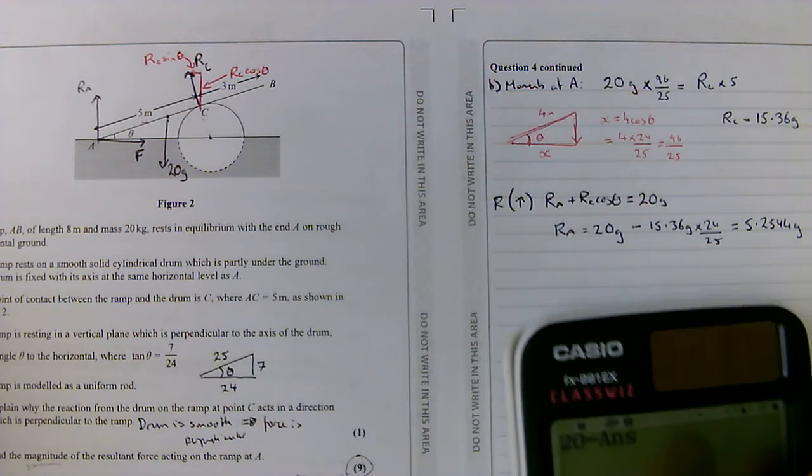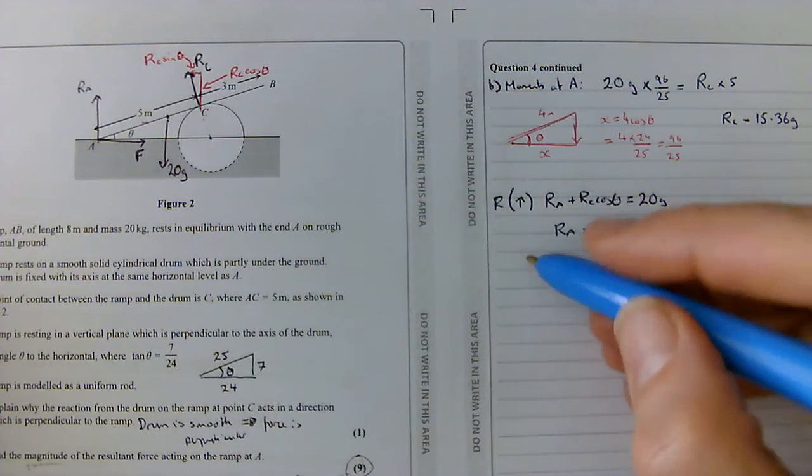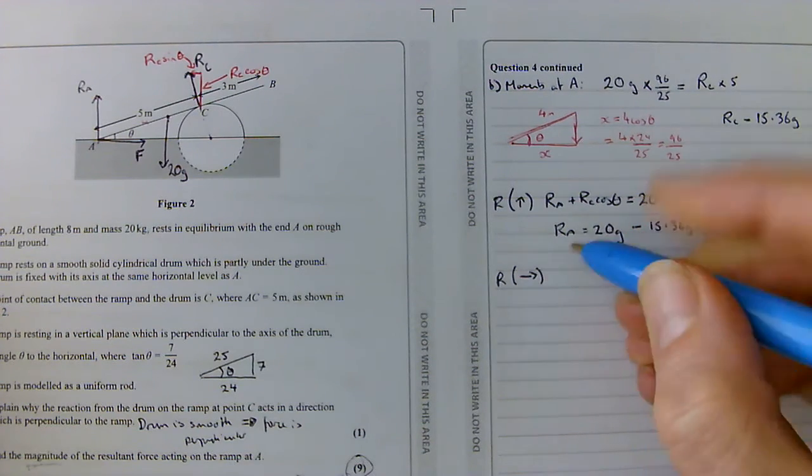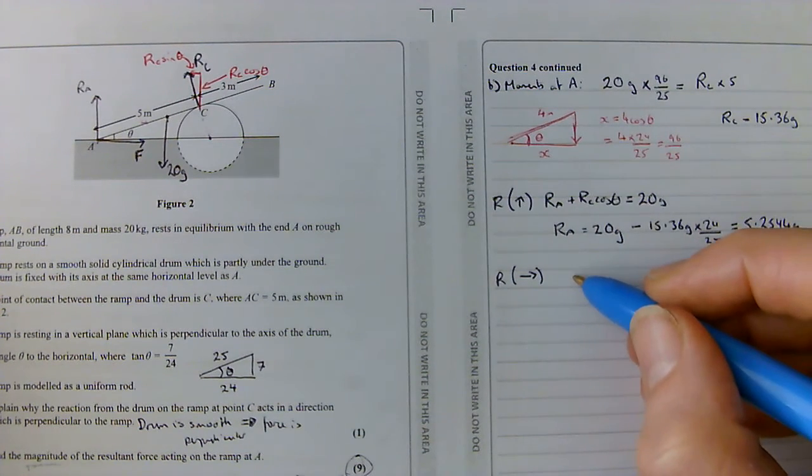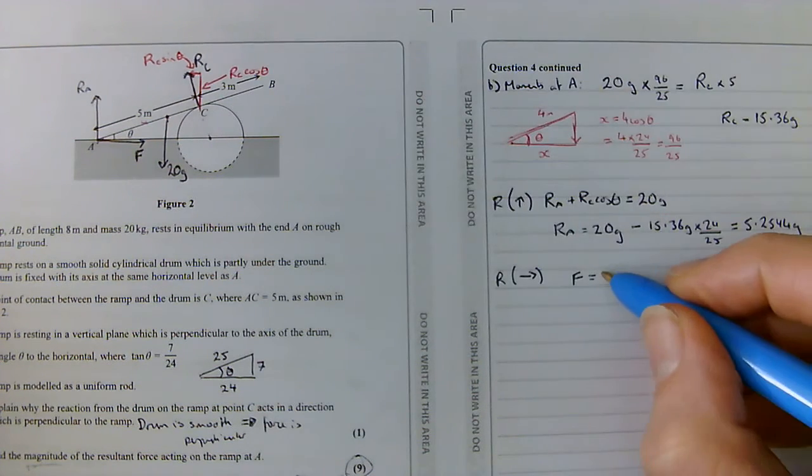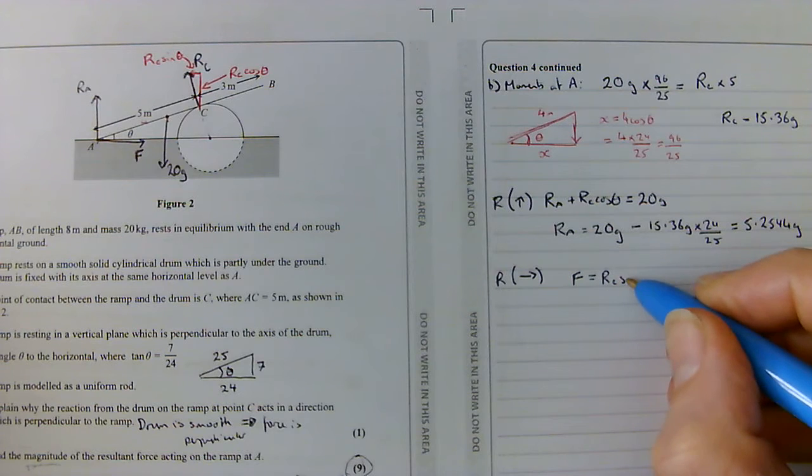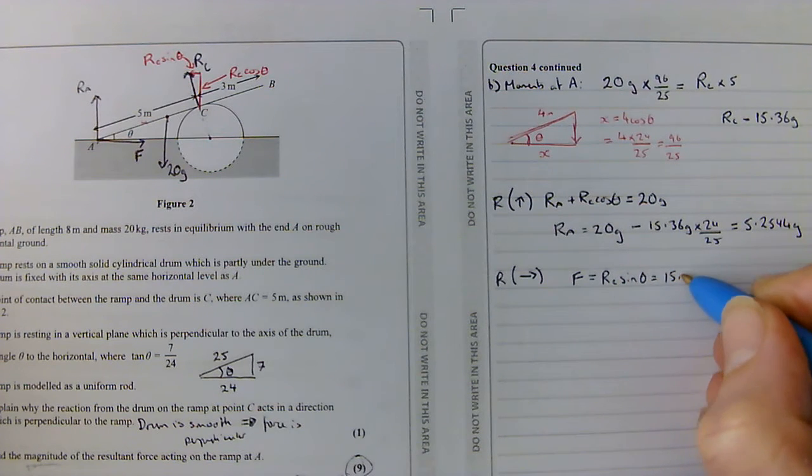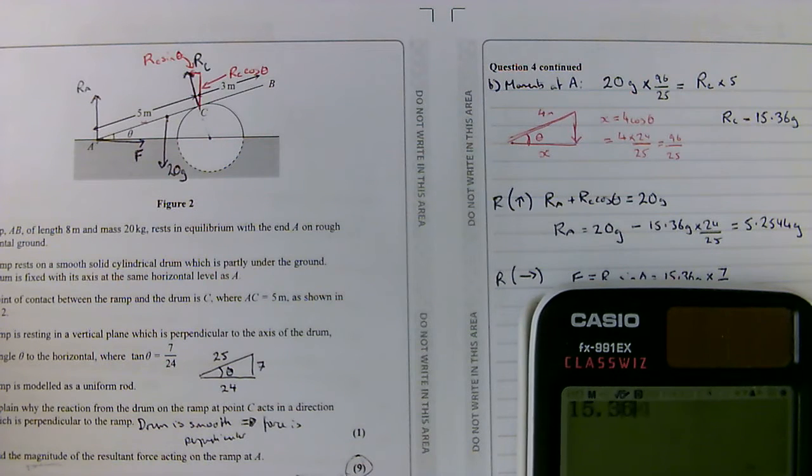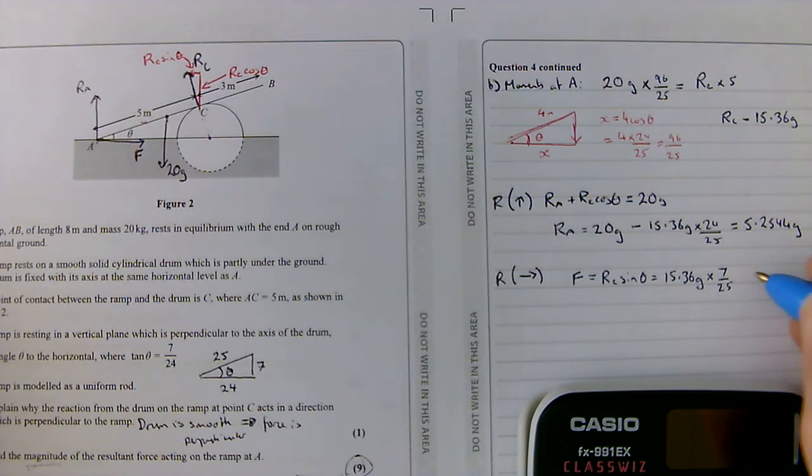My frictional force at A, so I'm going to resolve to the right, and I can say the only force acting to the right, which is F, is equal to the only force acting to the left, which is R_C sine theta, which is 15.36G times 7 over 25. 15.36 times 7 over 25 gives me 4.3008G.